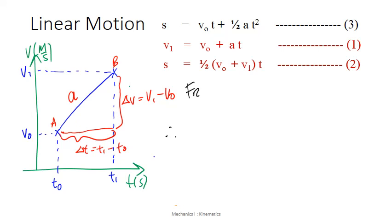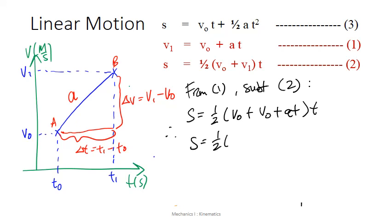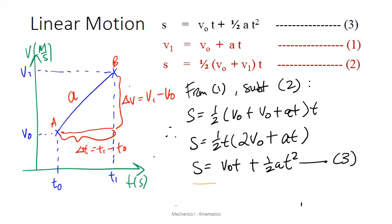So from equation 1, substitute that into equation 2. And we will have s equals half V0 plus V1, which is V0 plus aT from equation 1, times T. Let's simplify it, we will have 2V0 plus aT. And multiply that in, we will have V0T plus half aT square. And there you have it, equation 3.